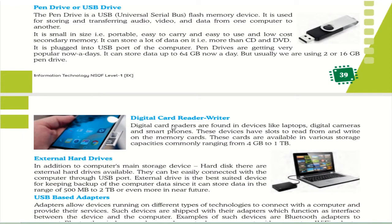Next is the digital card reader/writer. Digital card readers are found in devices like laptops, digital cameras, and smartphones. These devices have slots to read from and write on memory cards. You can use memory cards in your mobile as well as in computer systems. Next is the external hard disk — in addition to the computer's main storage device, external hard disks are available and can be easily connected with a computer through a USB port.